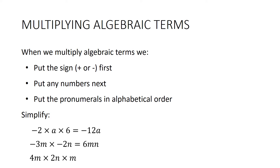This one: 4m times 2n times m. So the numbers first — 4 twos are 8. m times m is m squared, and then n. So the answer is 8m²n.